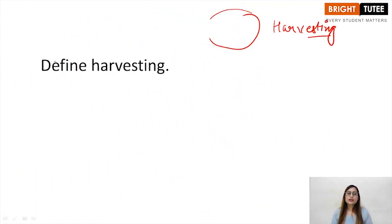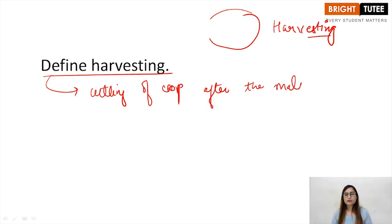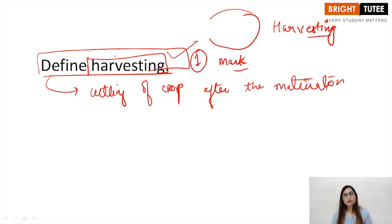So, what is harvesting? Harvesting is basically the cutting of crop after the maturation. This is known as harvesting. You can watch the lecture as well for this. This is a one mark question, very simple. It can come as a definition. This question can come for the definition of harvesting, it is a simple one mark question.